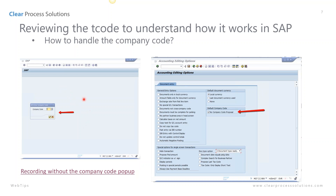In order to get the company code pop-up screen to come up so you can actually key in your company code, you need to change your editing options and check 'no company code proposal.' By default that is not checked. This tells the system: I don't want to default my company code — I need you to pop this screen up every time so I can change my company code.